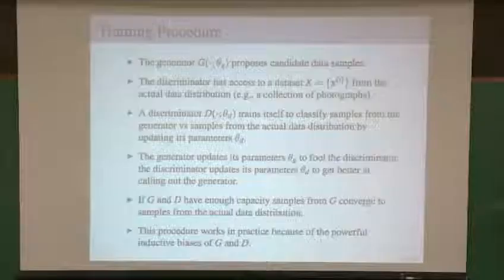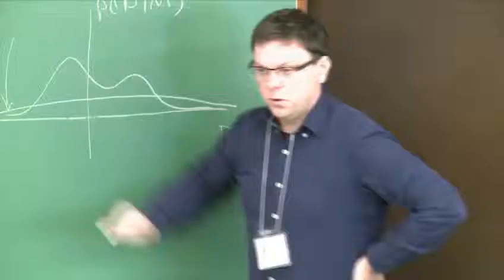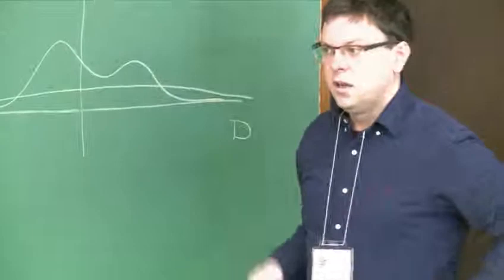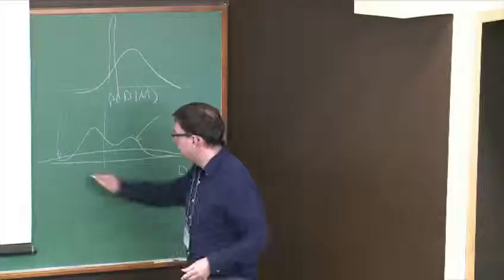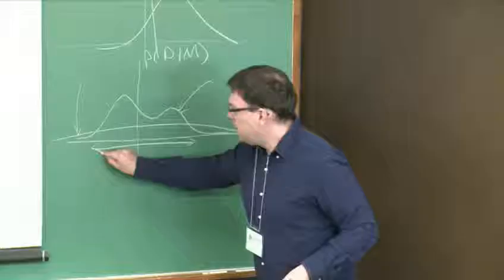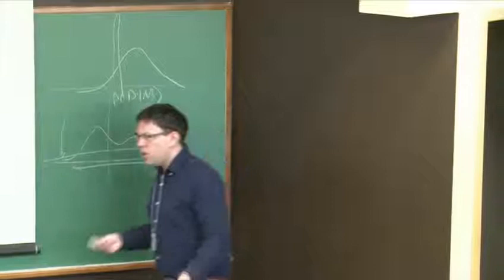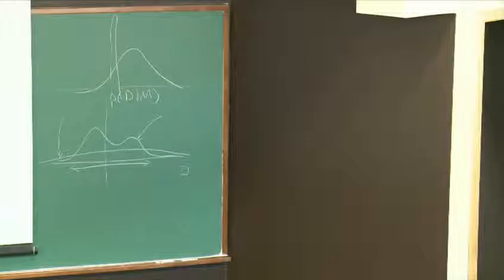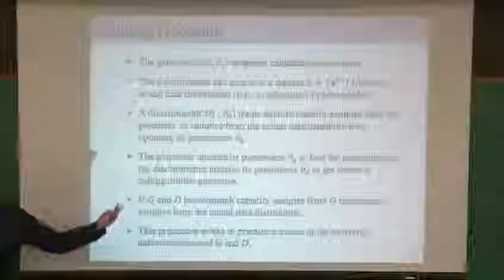A convolutional neural network is actually less general than a fully connected neural network — it has various constraints — but these constraints correspond to good priors over images. Another way of putting it: if our generator is an inverted convolutional neural network, on average the types of images we would get from that generator starting from a vague noise distribution would look more like the data we're trying to model than if we used a fully connected neural network.